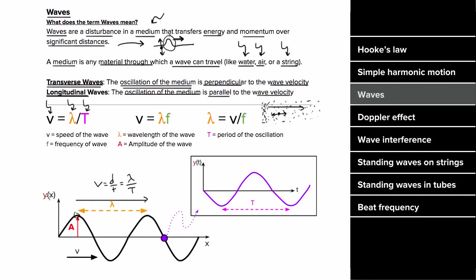You can find the wavelength on a graph of y versus x by finding the distance between crests. If it's a graph versus x (horizontal position), peak to peak is the wavelength. But if it's a graph of y versus time, it represents the motion of a single point on the wave, and the interval between peaks is the period. So always check whether the graph is vs. x or vs. t.